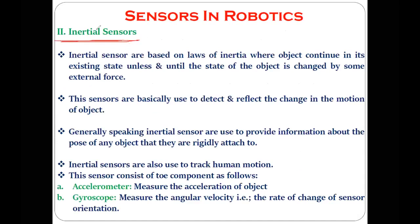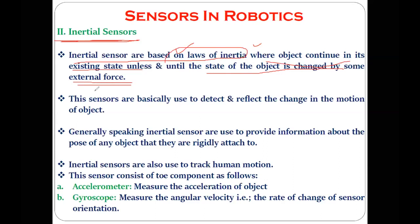The next most popular sensor is the inertial sensor. Inertial sensors are based on the laws of inertia that you must have studied in physics — where an object continues in its existing state unless and until the state of the object is changed by some external force. Interestingly, every one of you has an inertial sensor with you right now, because every smartphone comes with inertial sensors.